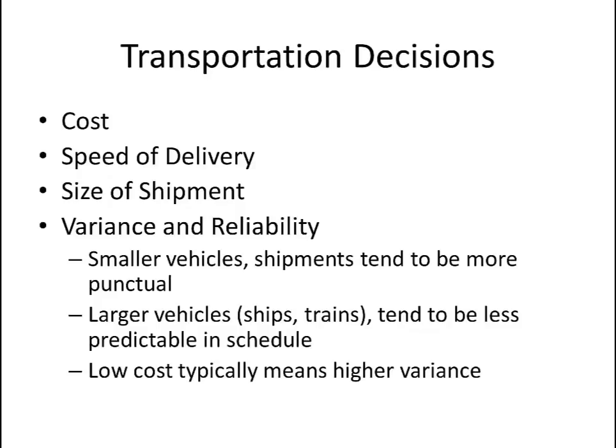Choice of transportation mode concerns many factors: the cost of the movement, the speed of delivery, and whether or not the transportation mode is suitable for the volume of freight. However, the greatest factor from a supply chain perspective is the reliability of the mode — that is, how much variance is there in the delivery schedule? Generally, larger freight shipments tend to be less predictable and vice versa. Low cost transportation also typically implies less predictable, more variable delivery schedules.